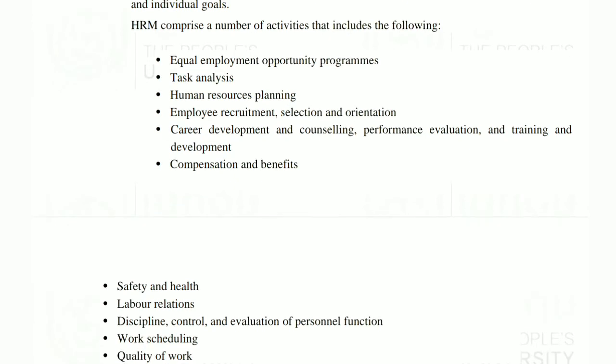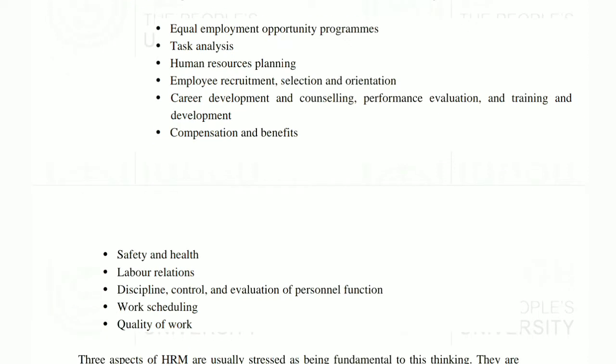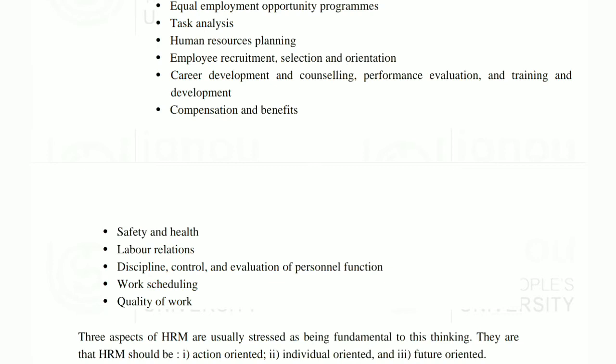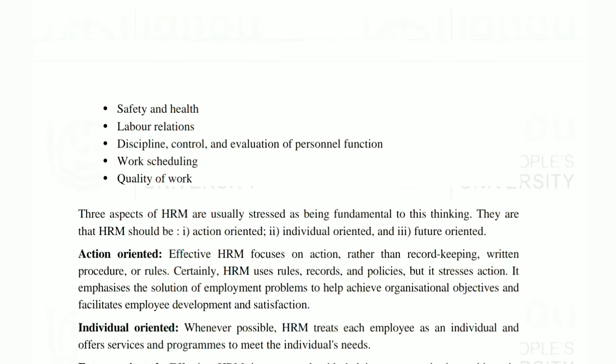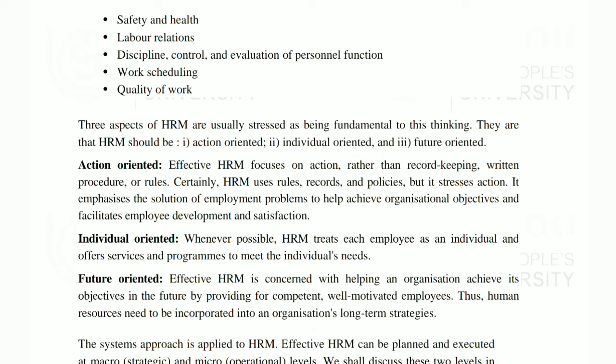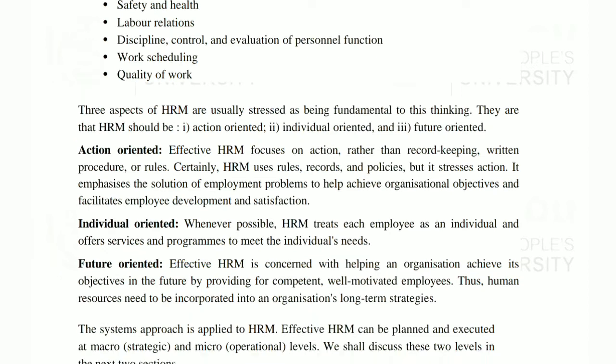HRM comprises a number of activities including: equal employment opportunity programs — meaning every person has an equal opportunity in employment — task analysis, human resource planning, employee recruitment, selection and orientation, career development and counseling, compensation and benefits, safety and health, labor relations, discipline control and evaluation of personal function, work schedules, and quality of work. If your human resource planning is good and your organization is good, the outcome is good because your human resources are satisfied with their work.